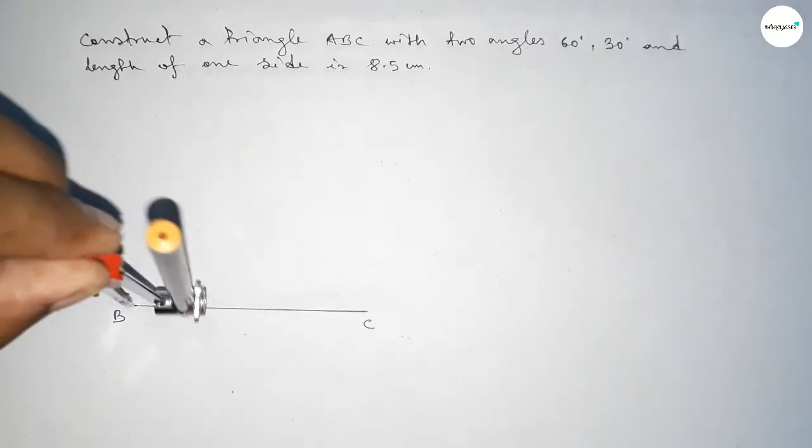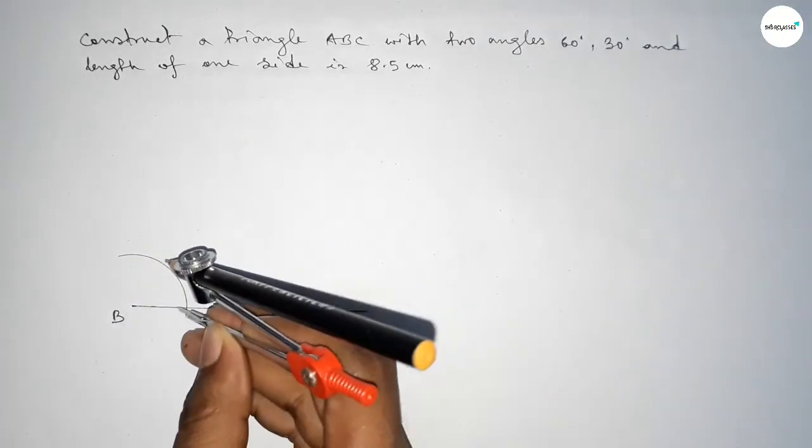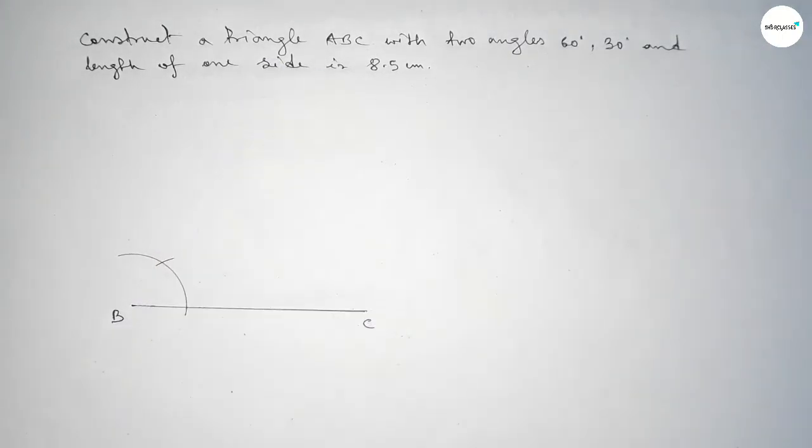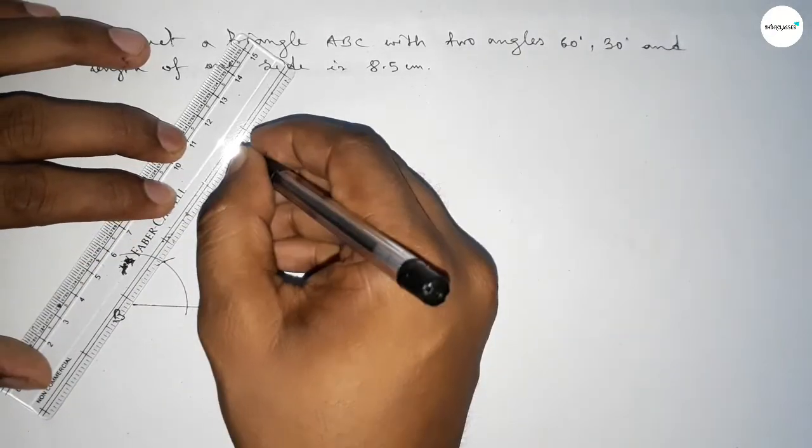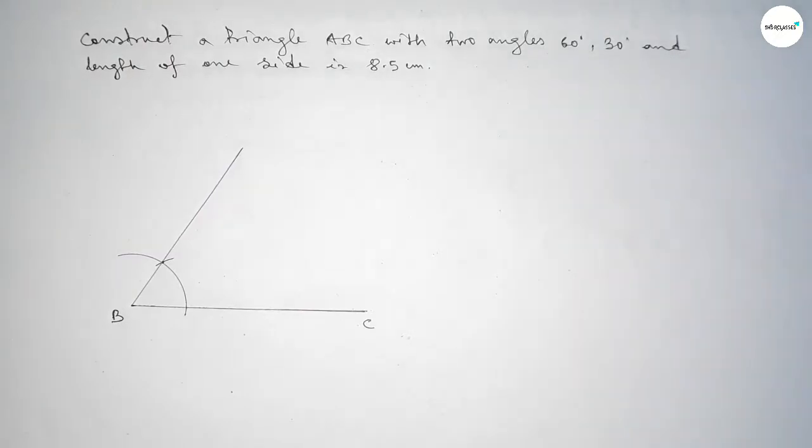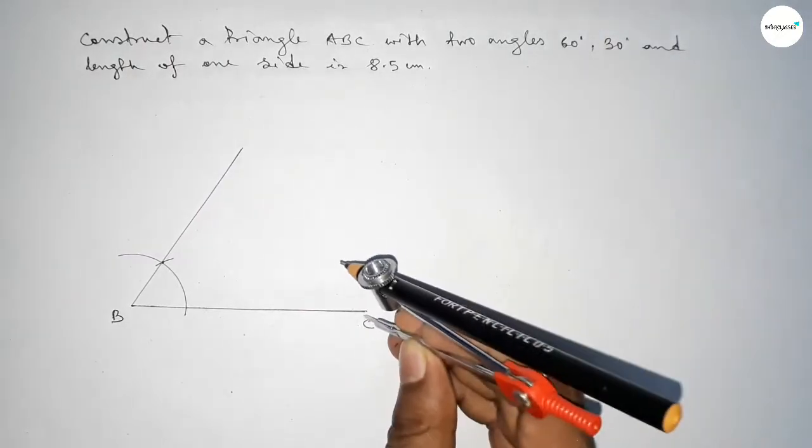Putting the compass here and taking any length and drawing an arc here. Putting the compass here with same length and cut here so both curves intersect at a point. Now joining this line. Now drawing 30 degree angle...